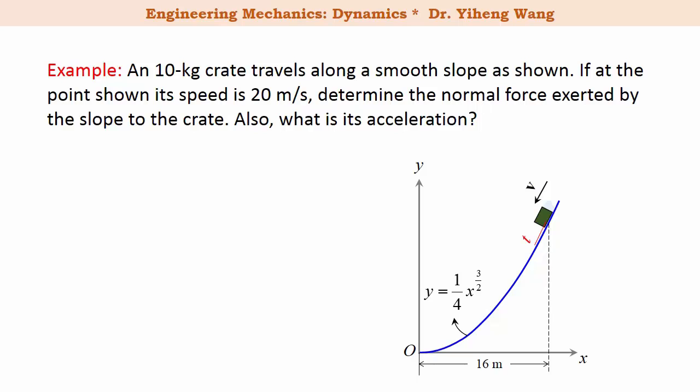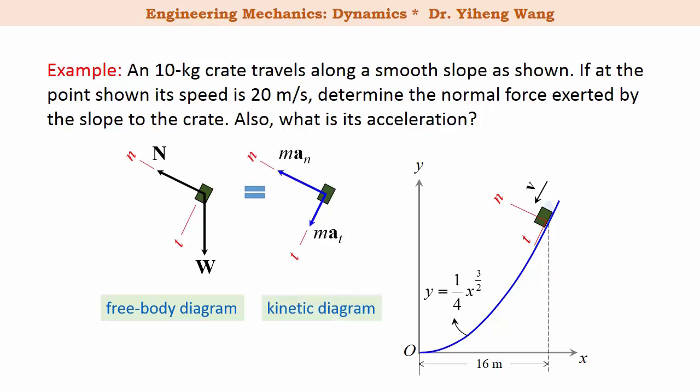The tangential axis is always tangent to the slope and points towards the direction of motion. The normal axis is always perpendicular to the tangential axis, pointing towards the center of curvature. Now we can draw the free body diagram of this crate. It is subjected to only two forces: the weight and the normal force exerted by the slope on the object. We equate this to the kinetic diagram with the two acceleration components a_t and a_n. The normal force is always perpendicular to the slope, so it is already along the normal direction.